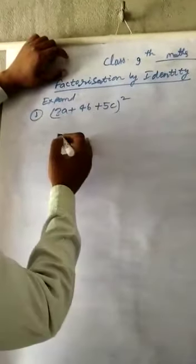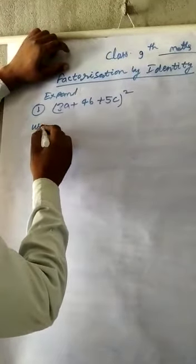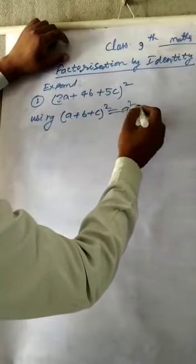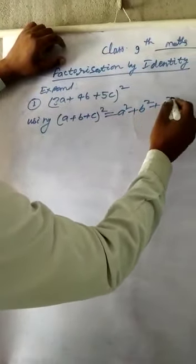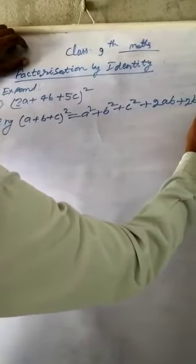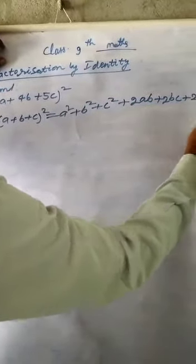Expand 3A plus 4B plus 5C whole square using the identity: A plus B plus C whole square equals A square plus B square plus C square plus 2AB plus 2BC plus 2CA.